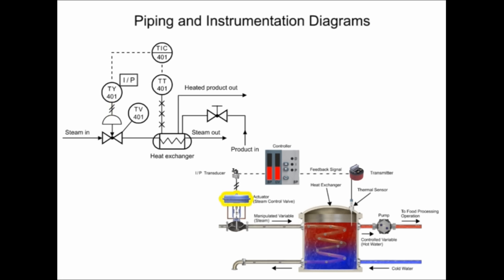The pneumatic control diaphragm actuator that opens and closes the globe valve regulates steam in the process. The actuator is represented by the half circle in the P&ID. The arrow pointing downwards from the actuator indicates a fail-closed valve type.